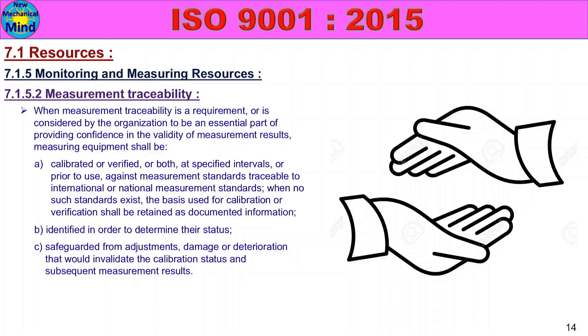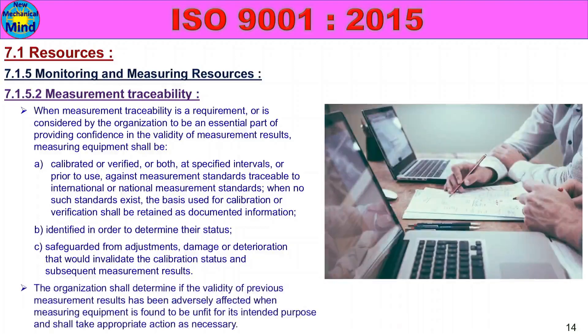When measuring equipment is found to be unfit for its intended purpose, the organization shall determine if the validity of previous measurement results has been adversely affected, and shall take appropriate action as necessary.